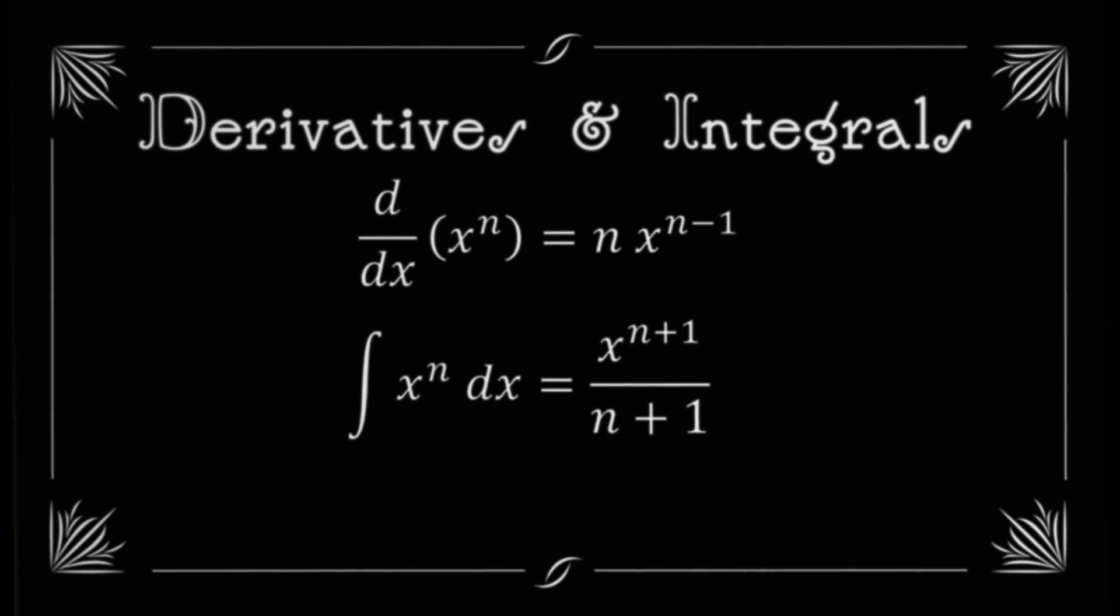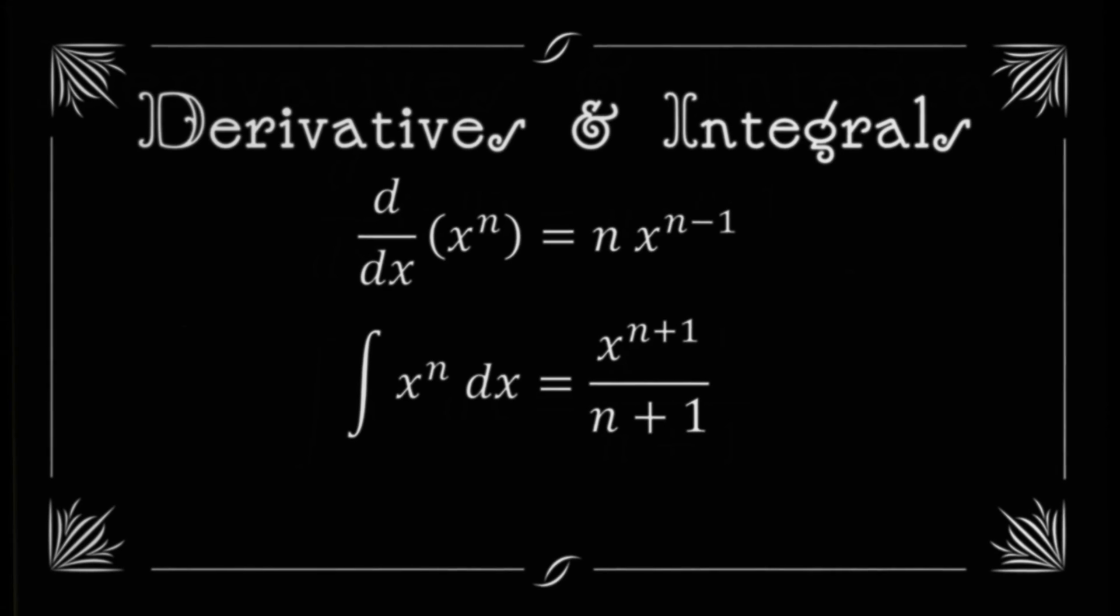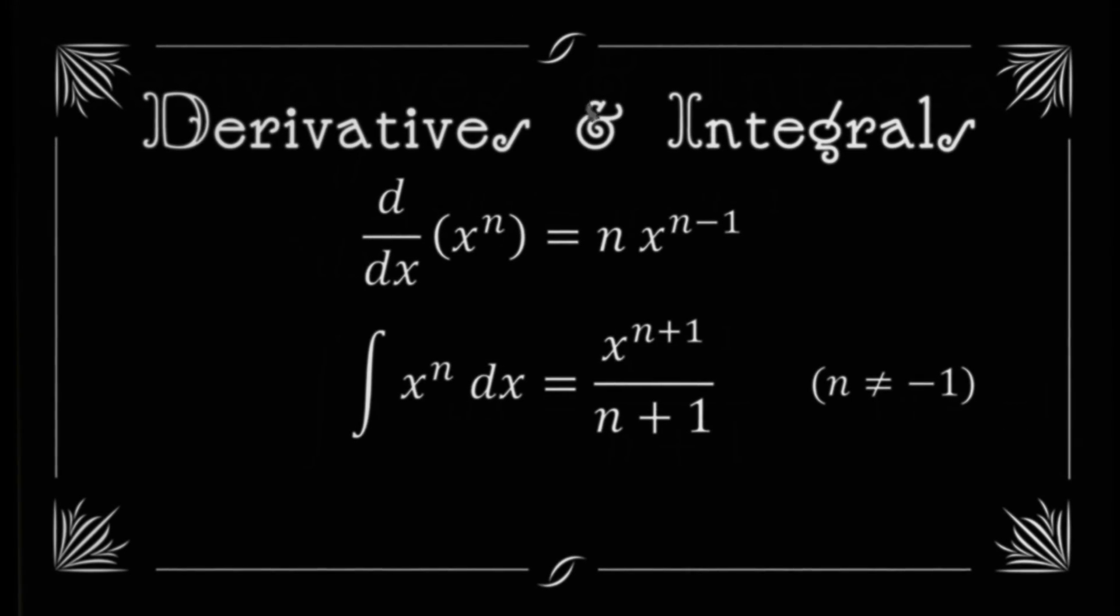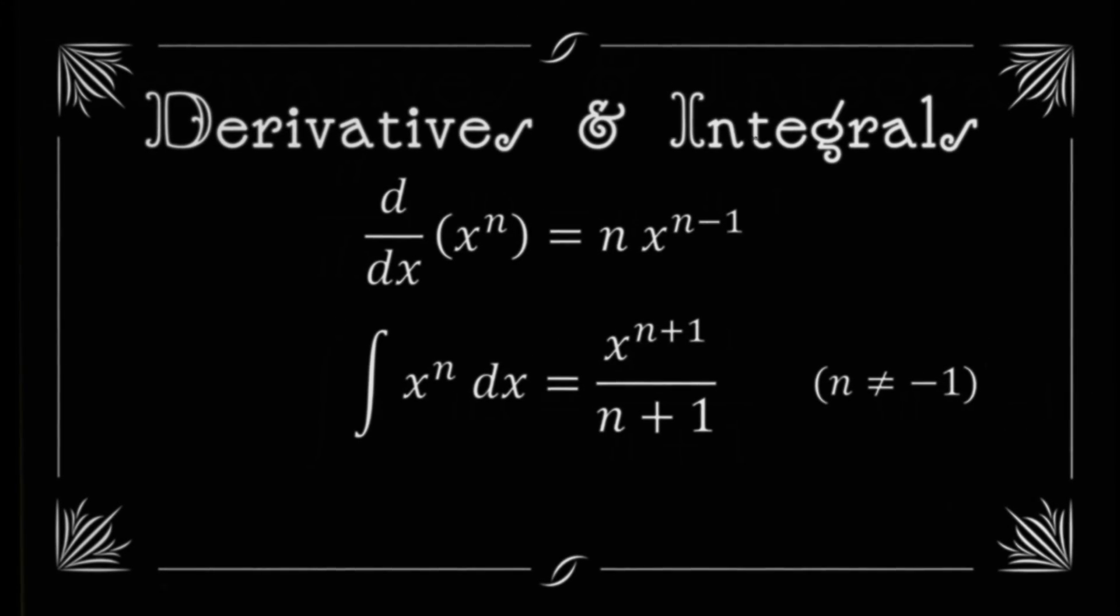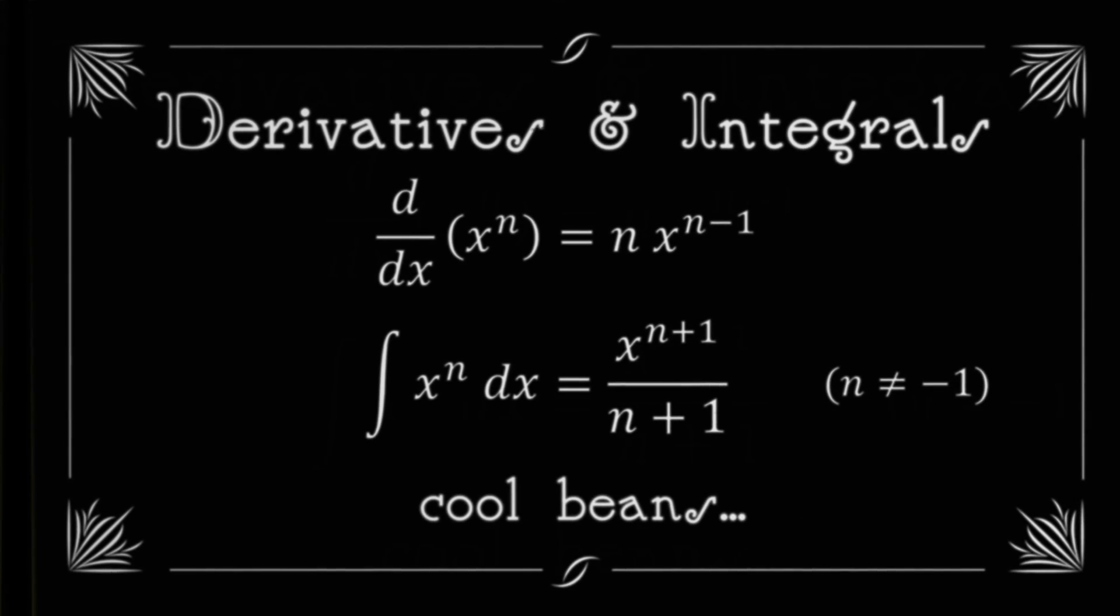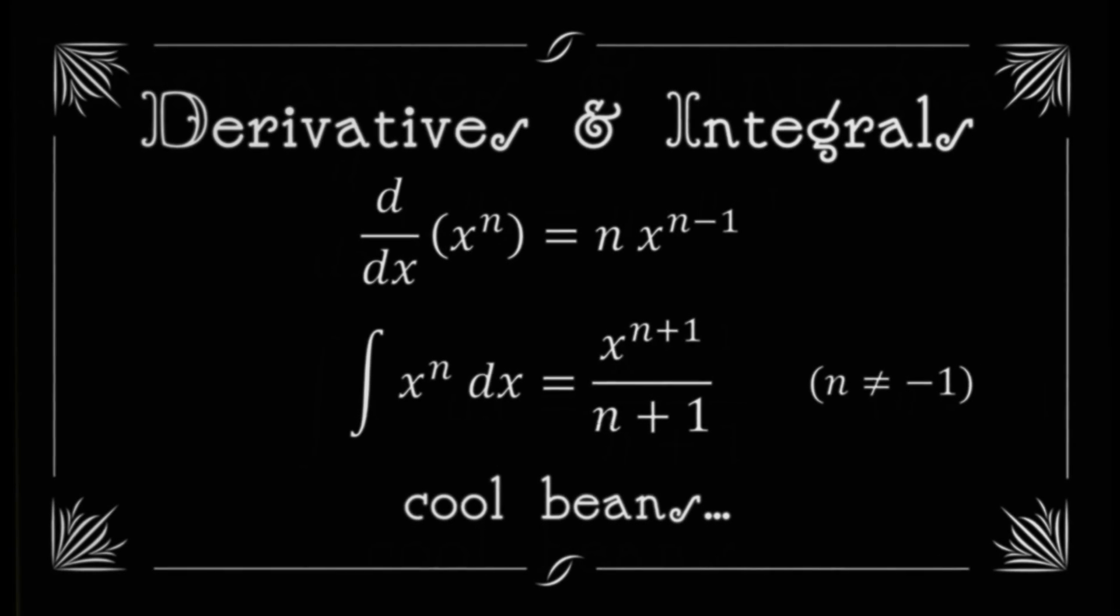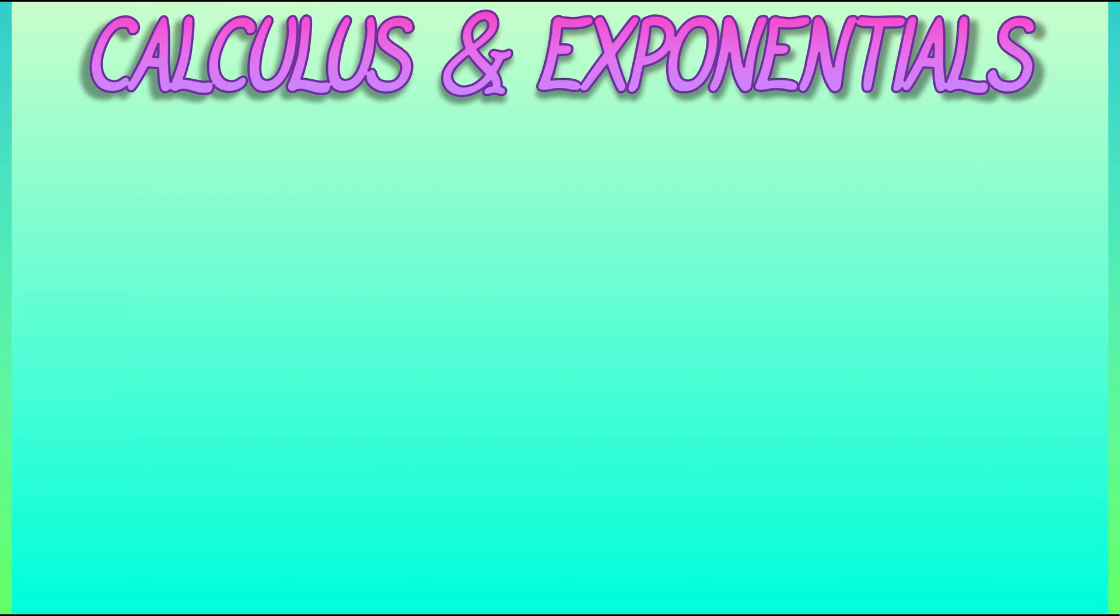Oops, I forgot the constant. Oh, I also forgot that this does not quite work when n is equal to negative 1, there's something a little different there. But let's keep it simple. This is nice, cool beans. Now, what can we do with this in light of the exponential function?